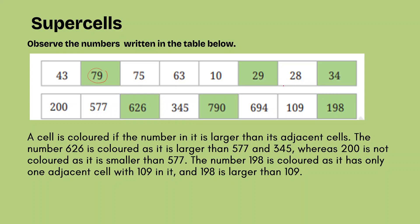Similarly for all other numbers: a cell is colored if the number is larger than its adjacent cells. The number 626 is colored as it is larger than 577 and 345, whereas 200 is not colored as it is smaller than 577. The number 198 is colored as it has only one adjacent cell; since 198 is greater than 108, it is colored.